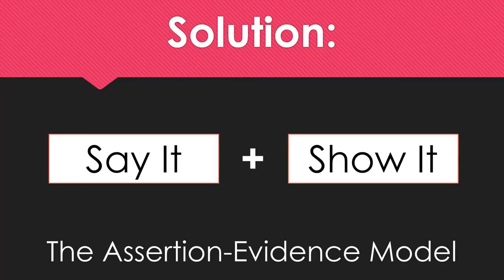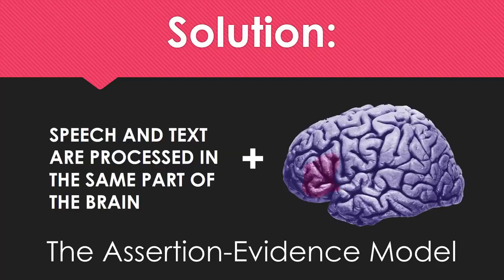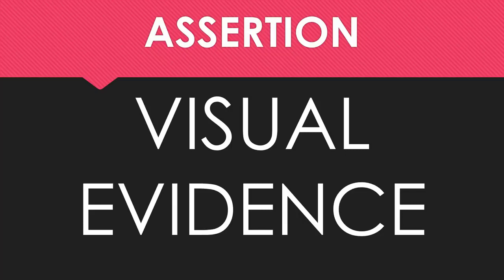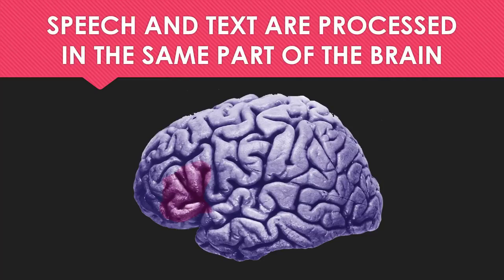Here's an example. Speech and text are processed in the same part of the brain — so you show a brain. Here's what it would look like in a full slide. You can take the simple approach: no more than two lines up top with the main claim, your one idea that you want to say, and then visual evidence that supports the claim below, like this.